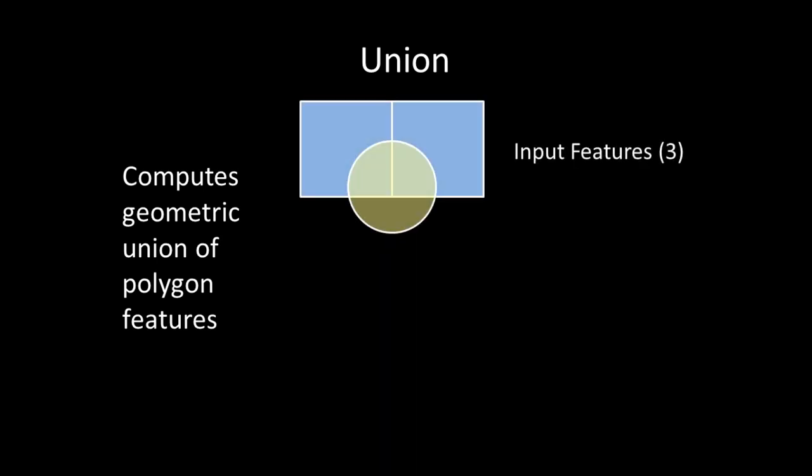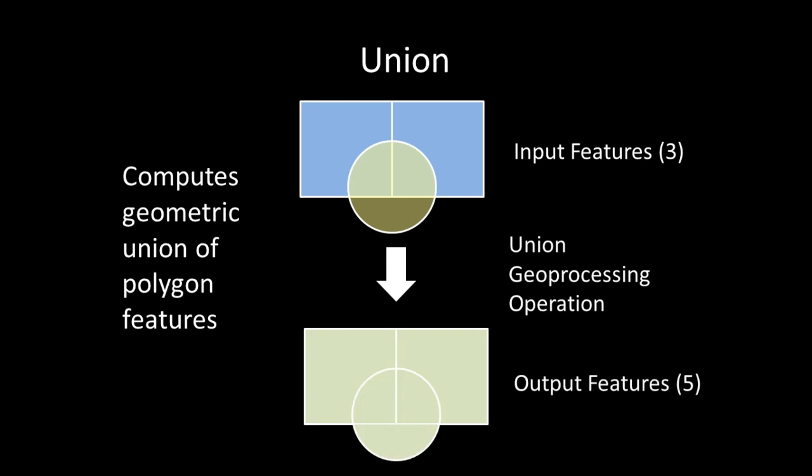Union is a function that computes the geometric union of polygon features. For example, given three features — two blue rectangles and a yellow circle — when the union geoprocessing operation is run, a total of five new output features will be created based on where geometric unions between the three original input features were found.